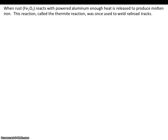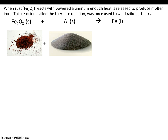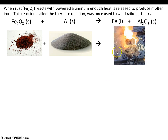Let's take a look at a real example. When rust reacts with powdered aluminum, enough heat is released to produce molten iron. This reaction, called the thermite reaction, was once used to weld railroad tracks. Here's the rust. If you react it with powdered aluminum — you need a little fuse or some heat to get it going — it will react to make liquid iron and aluminum oxide, releasing a lot of heat in the process. Enough heat to make the iron a liquid, which then drips down and welds the railroad tracks together.